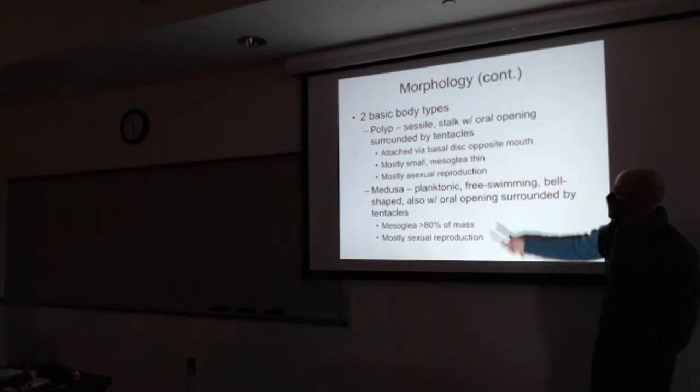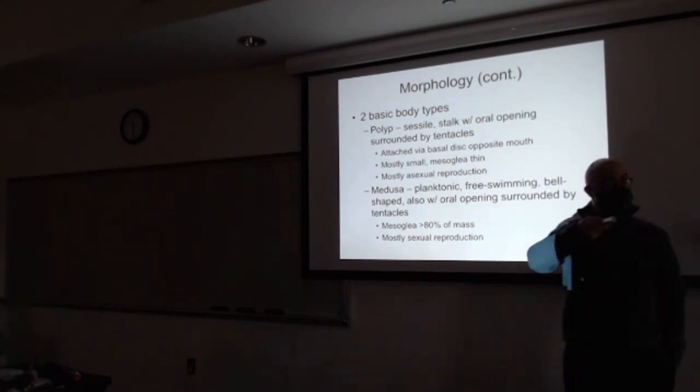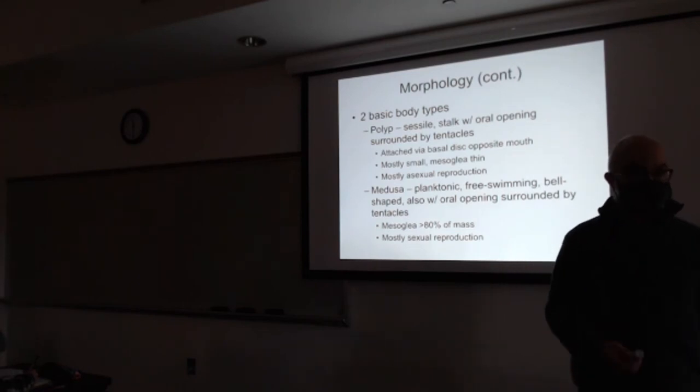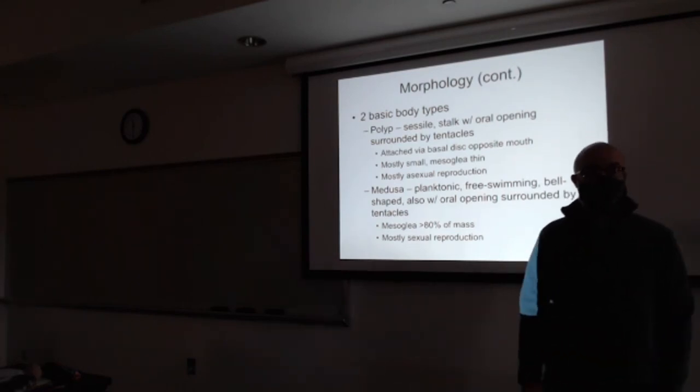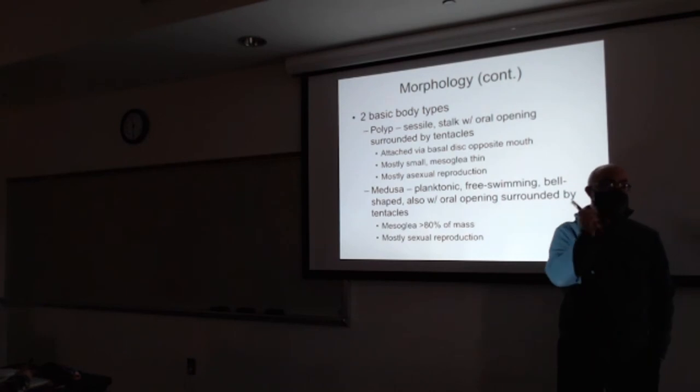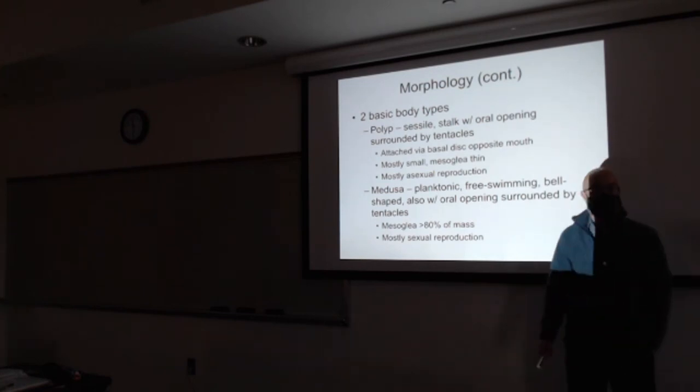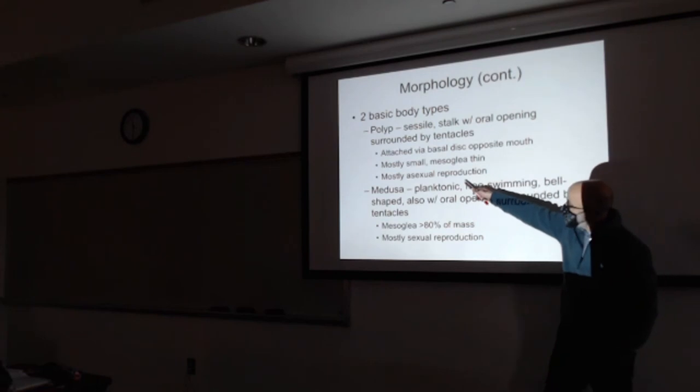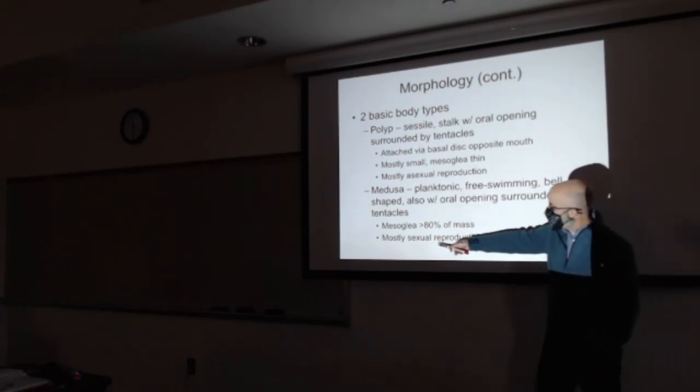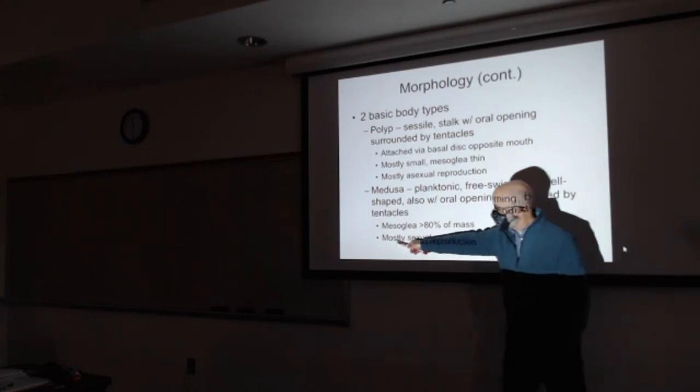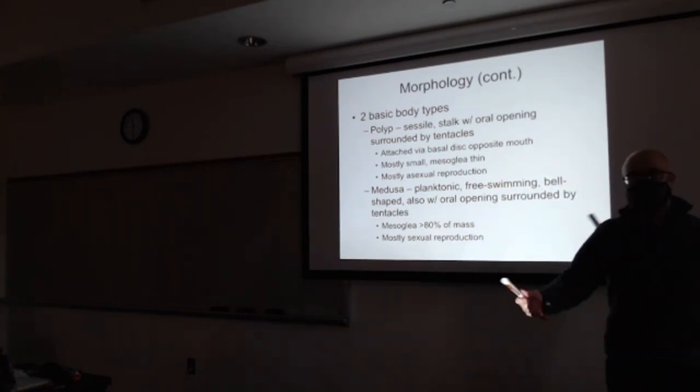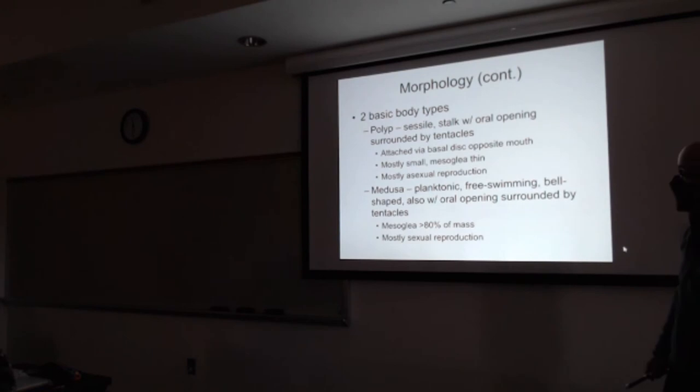A polyp is a coral, anemones, hydras. Corals never have a medusa stage. But there are some cnidarians that have both in the life cycle, like Obelia. Polyps, mostly asexual reproduction. Medusa, mostly sexual reproduction. Now, these are all trends, patterns, but it's worth learning those trends. And the tentacles on the polyp are stingers, and on the medusa.